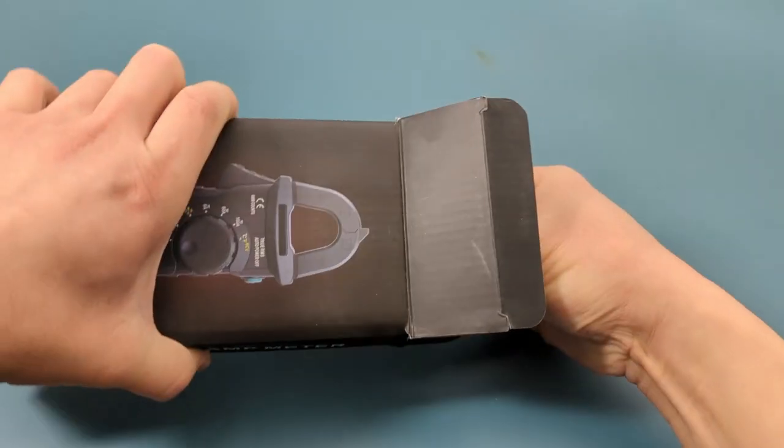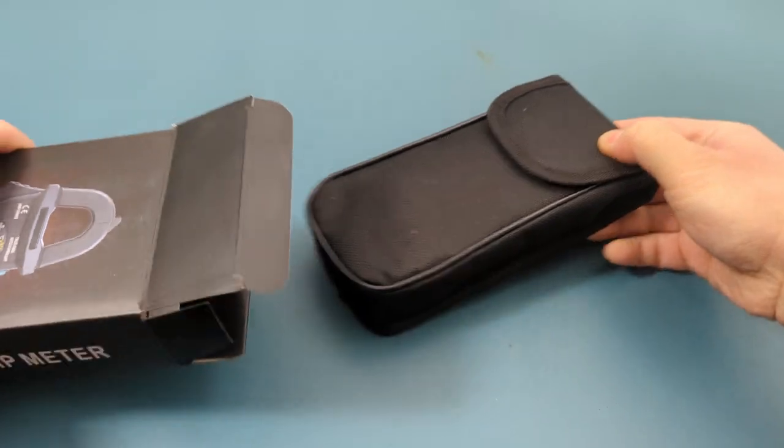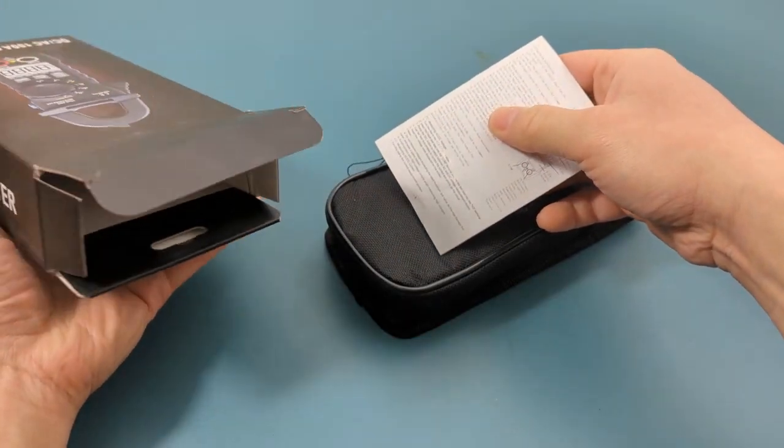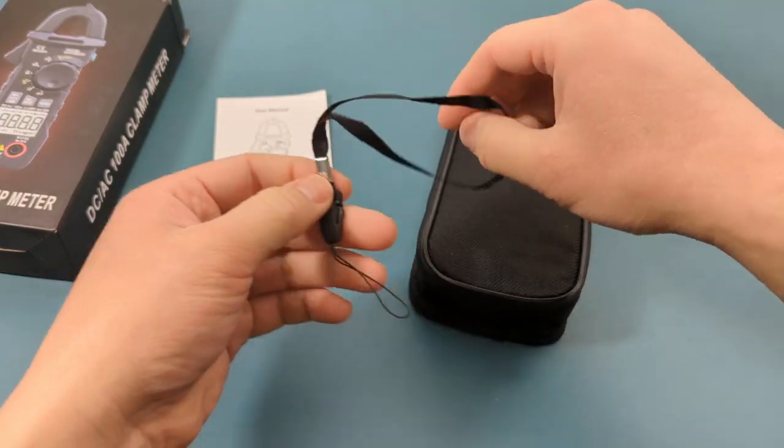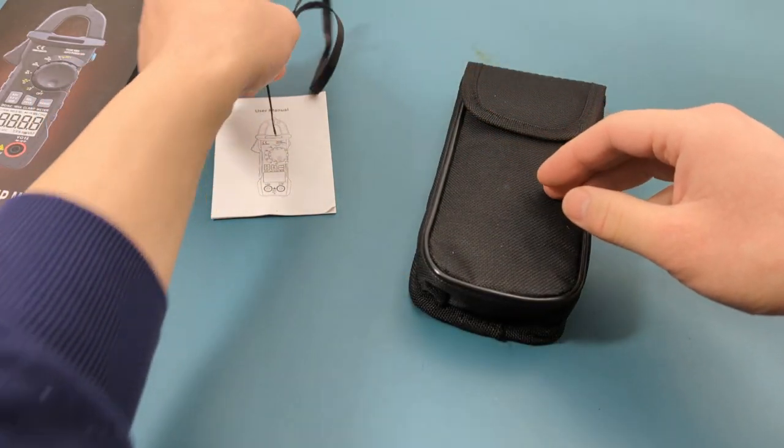Let's start with the unboxing. It comes with a case. There is a manual. A strap is included for attaching to the meter, making it easier to hold when you're on the go.